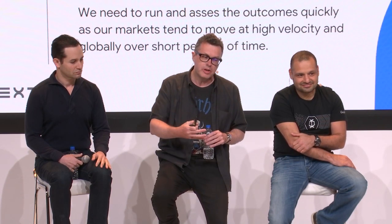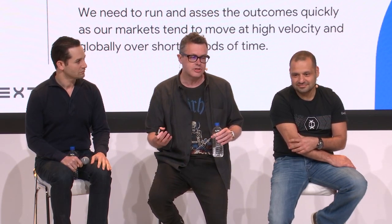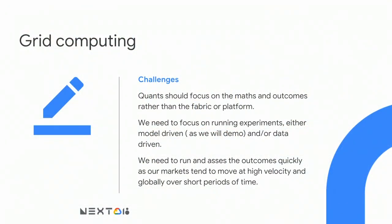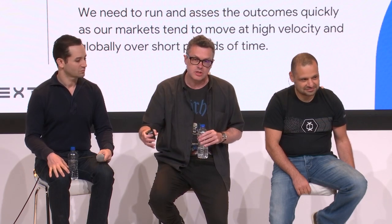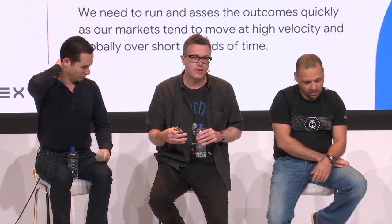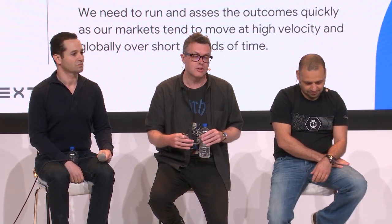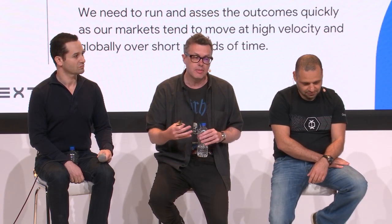Challenges. I've been in markets technology for a long time. I wanted quants — people writing maths — to focus on the maths and the outcomes, rather than thinking about the whole fabric. Over the years, you can spend 20% of your time on the mathematics and 80% thinking about how to make things scalable and distributed. My background is C++, and you spend a lot of time optimizing your C++ code to run on your PC — diminishing returns. I wanted mathematicians, physicists, and engineers to focus on running experiments, analyzing data and outcomes, rather than thinking about the ecosystem.